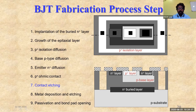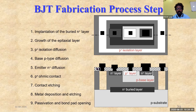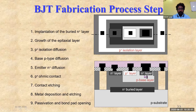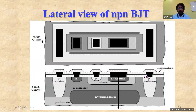After contact etching, metal deposition is done. The region where metal is to be deposited is etched, then masking is performed, and the metal is deposited in that particular region. After deposition, etching is done again, and an isolation layer is created over the metal regions. This completes the lateral view of the NPN BJT.